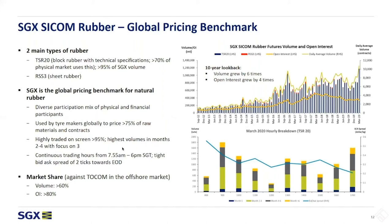Liquidity is concentrated in the third delivery months. We want to avoid the front month because it's a physically deliverable contract. There is only a T-session for the rubber contract — there is no T+1, though that is something we're currently looking at. Today SGX holds over 60% of market share in volumes and over 80% of market share in open interest.